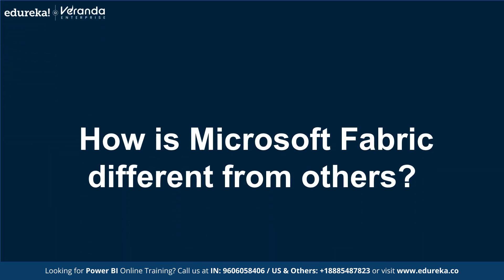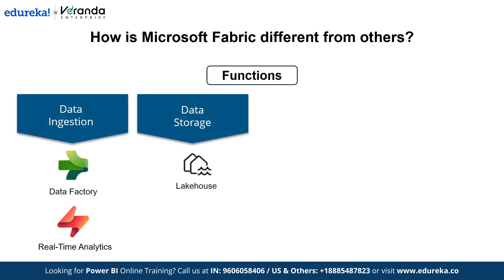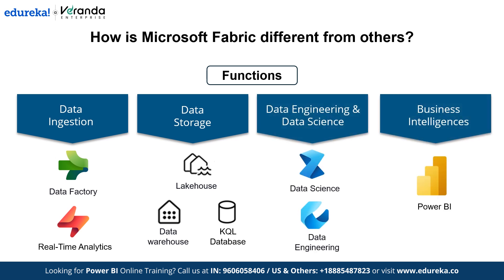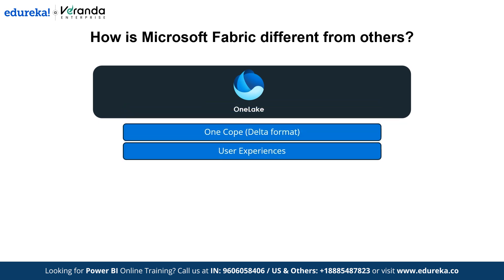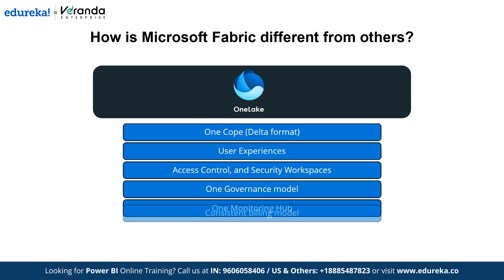How is Microsoft Fabric different from others? Microsoft Fabric is a unified, end-to-end analytics platform designed to tackle the challenges of modern data management. Unlike isolated tools or simple rebranding, Fabric is redesigned from the ground up to centralize data in One Lake, removing silos and redundant copies. It uses the open Delta format, allowing data engineers, scientists, and analysts to collaborate seamlessly on a single dataset. Fabric simplifies user experiences via a web-based interface similar to Microsoft 365, streamlining navigation, access control, and security via unified workspaces, and offers centralized governance, monitoring, and a consistent billing model.